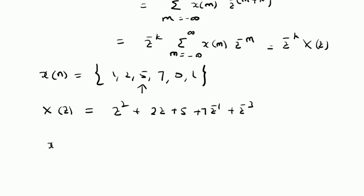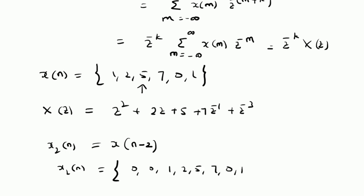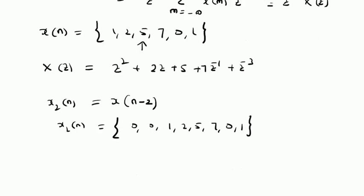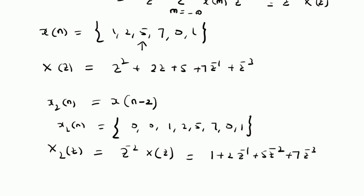Now consider a signal X2 of n, which is a shifted version of X of n, that is X of n minus 2. X2 of n will be a delayed version of the original signal: 0, 0, 1, 2, 5, 7, 0, 1. By using the shifting property, the Z-transform of X2 of n will be equal to Z power minus 2 multiplied by X of z. Using the result of X of z, this can be written as 1 plus 2Z inverse plus 5Z power minus 2 plus 7Z power minus 3 and Z power minus 5. This is the new Z-transform.